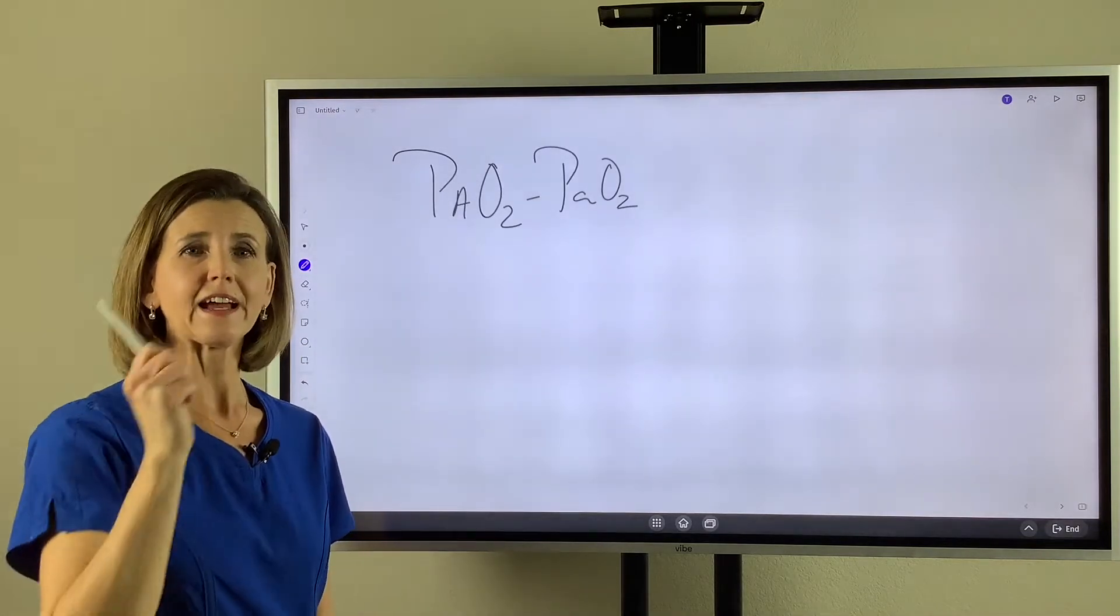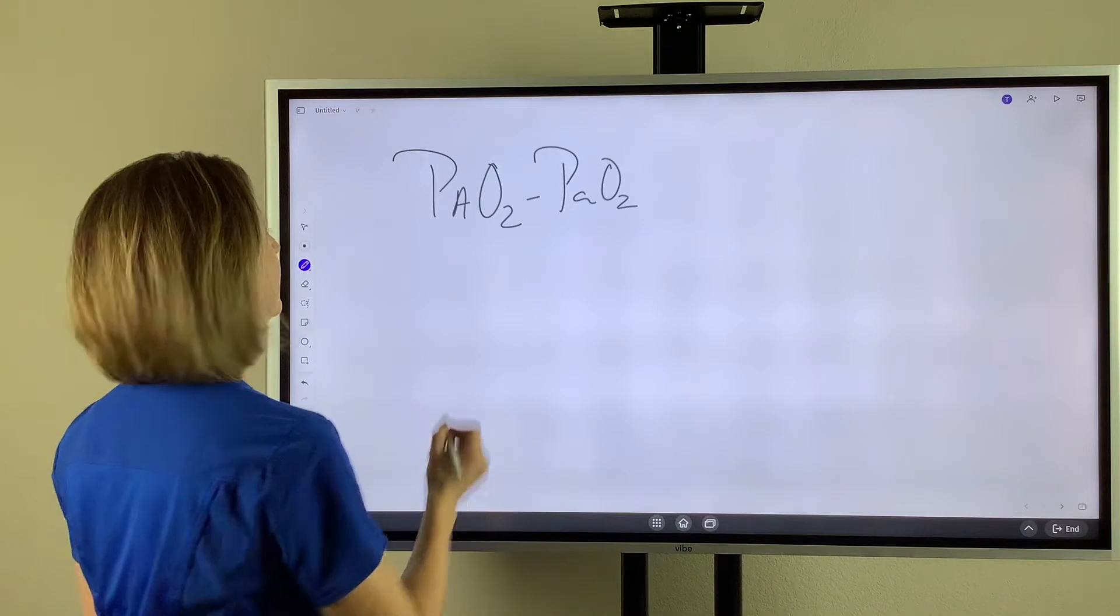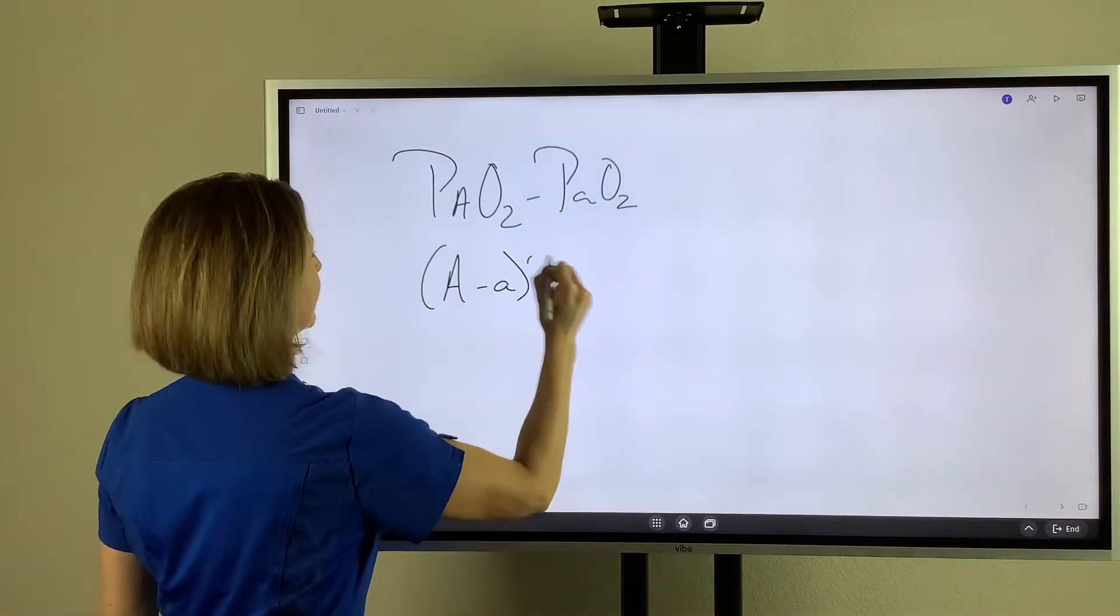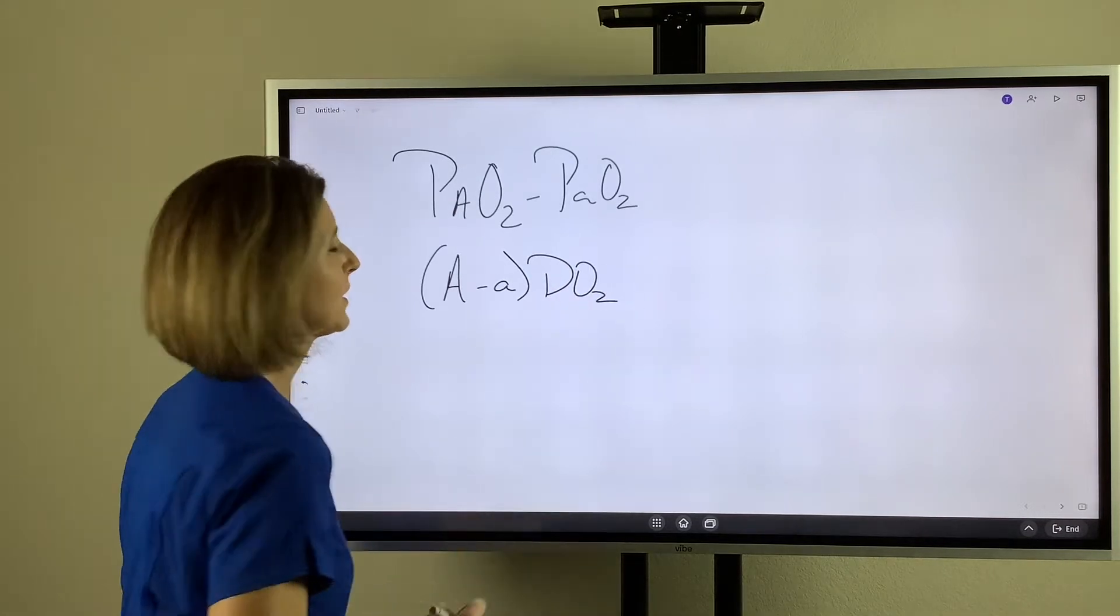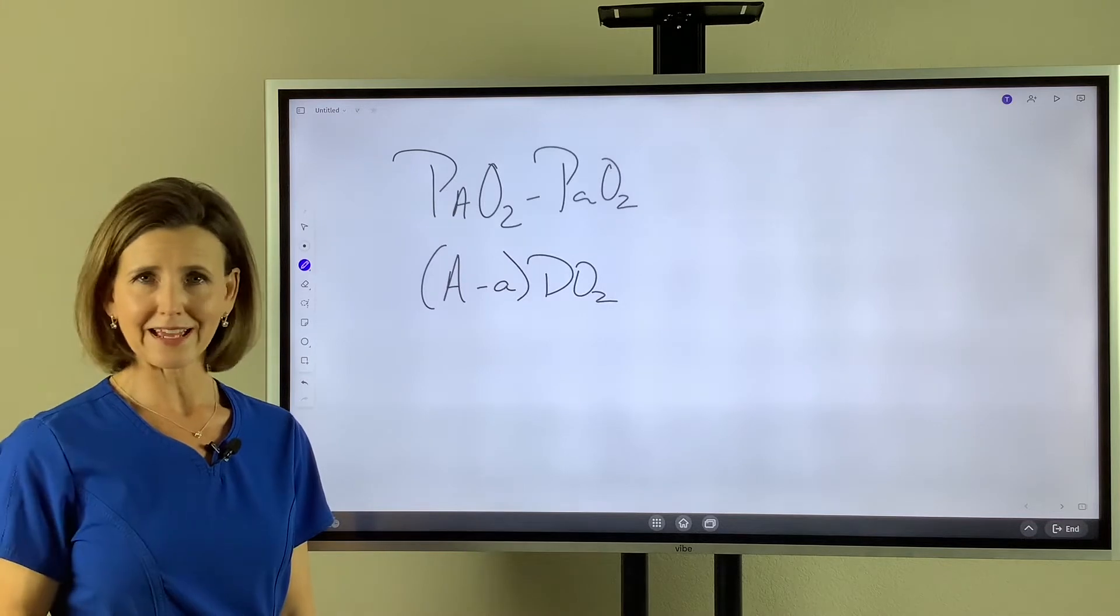Sometimes we call it the alveolar to arterial difference for oxygen, and you may see it written this way on the test. Most commonly when we're teaching it, we just call it the A-a difference.